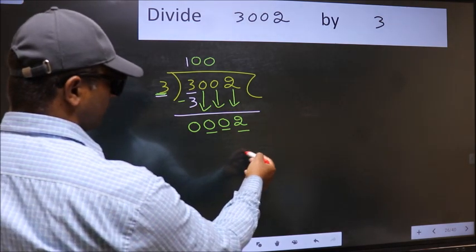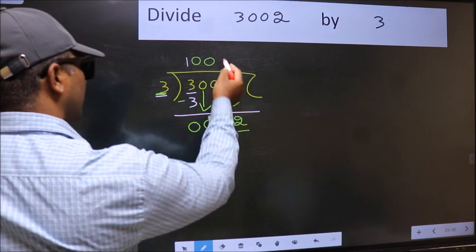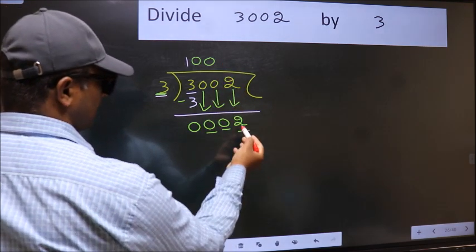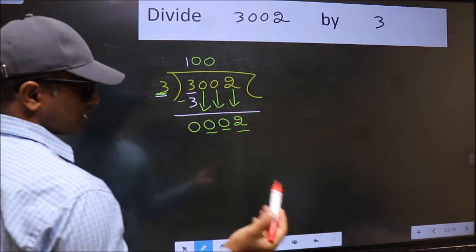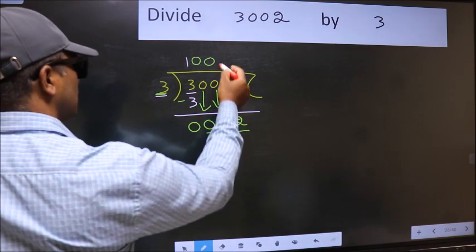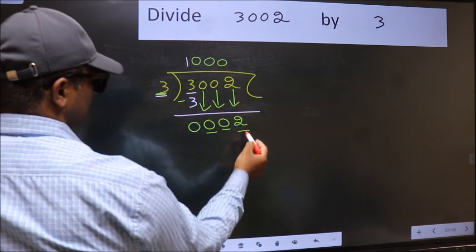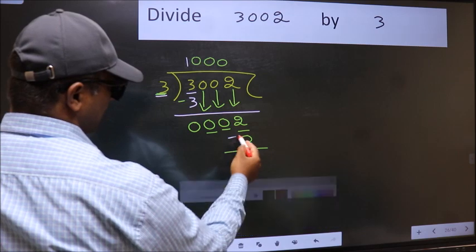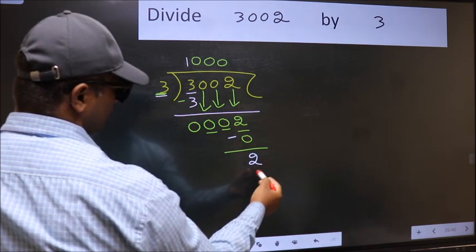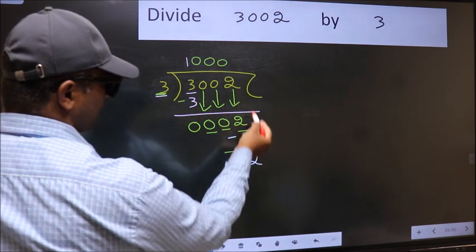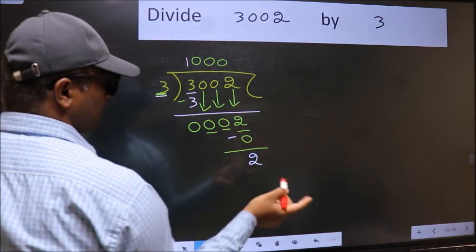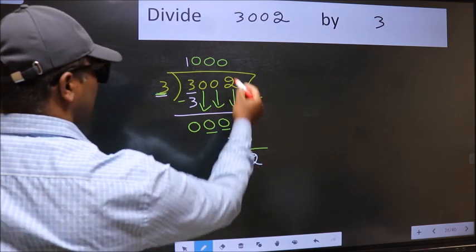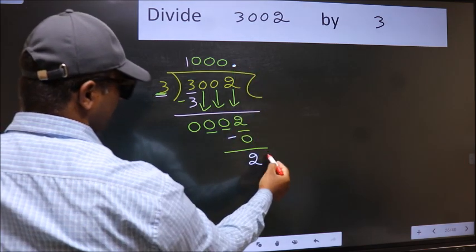If I take 1, we will get 3. But 3 is larger than 2. So what we should do is we should take 0. So 3 into 0 is 0. Now we should subtract: 2 minus 0 is 2. Over here, we did not bring any number down, and 2 is smaller than 3. So now we can put dot and take 0.